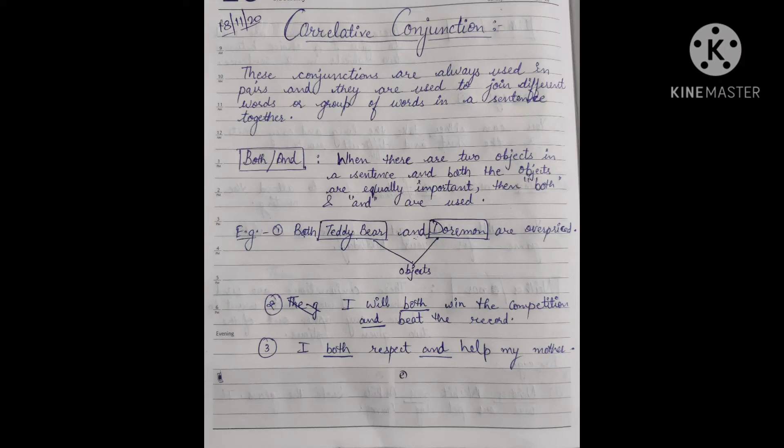Third example: 'I both respect and help my mother.' It means I respect my mother and also help her. Both respect and help carry equal importance - showing regard and also assisting her. So we used both words together as correlative conjunctions.